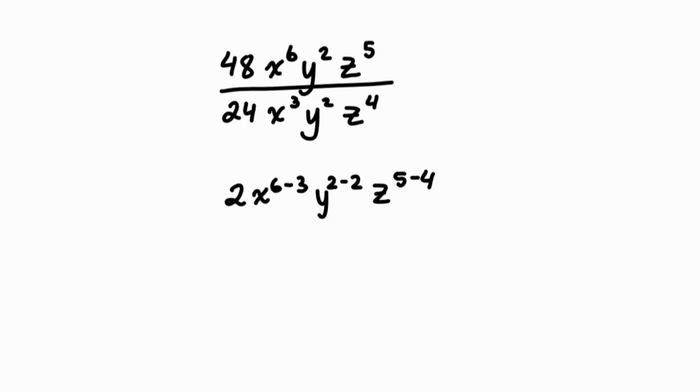Now let's continue simplifying. x will be to the power of 3. y will be to the power of 0, and anything to the power of 0 except 0 is 1, so y is gone. It turned into 1. And z will be 5 minus 4 to the power of 1.